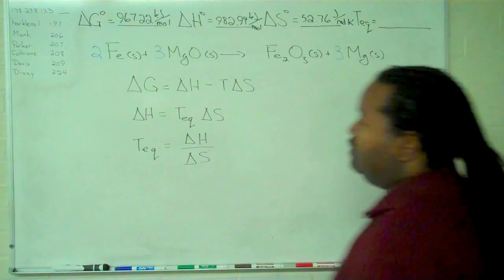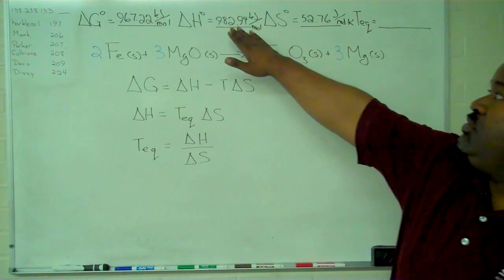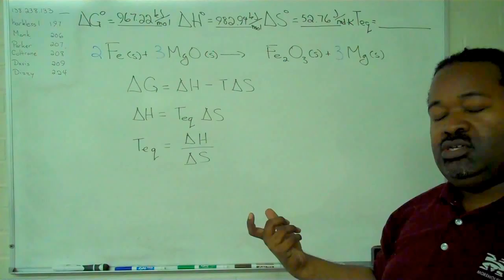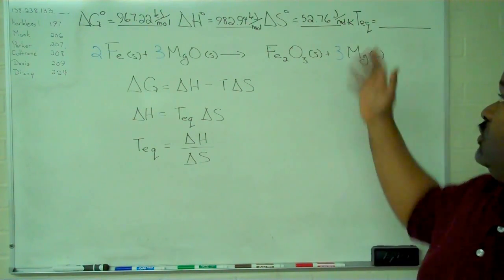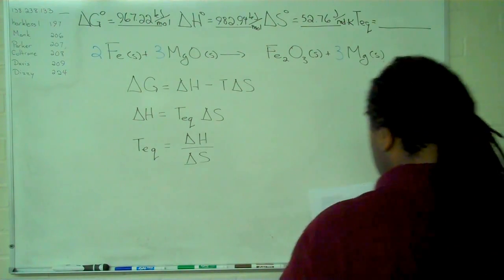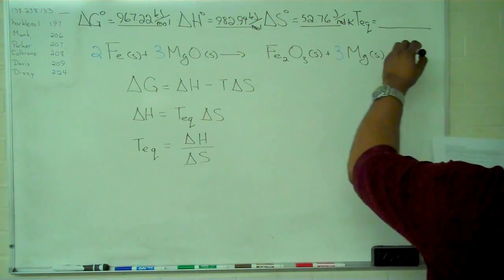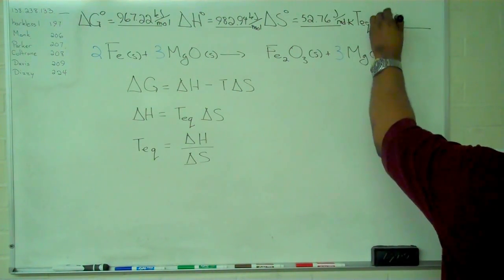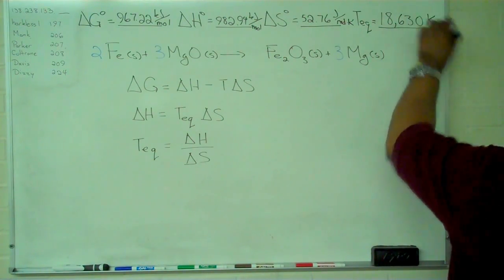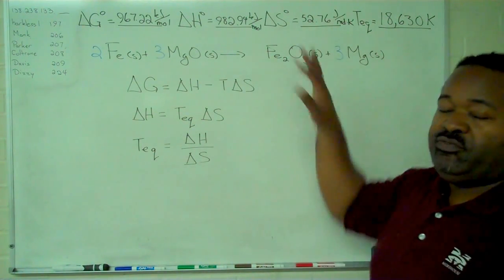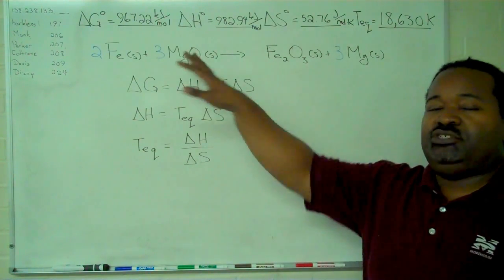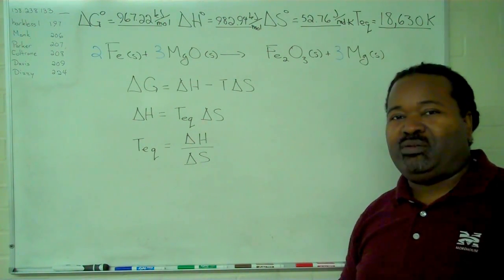So what we'll need to be able to recognize is that we do have the same sign on both of these. The units are different, so we'll need to correct for kilojoules. And in the end, we find that the equilibrium temperature is 18,630 degrees Kelvin. So that's a very large value, which means that in all likelihood, delta G will remain positive under normal laboratory conditions.